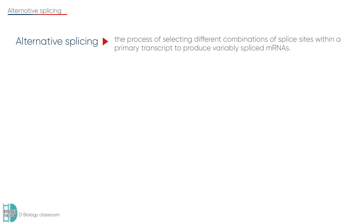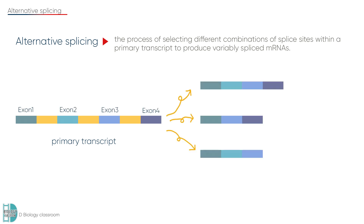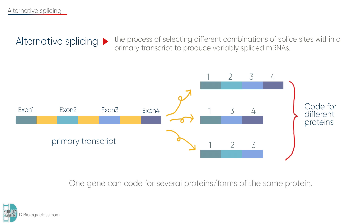Alternative splicing is the process of selecting different combinations of splice sites within a primary transcript to produce variably spliced mRNAs. It means a given primary transcript molecule can be spliced differently, resulting in different mRNAs being made from the original primary transcript. This allows the production of different proteins when the mRNA is translated, so one gene can code for several proteins or different forms of the same protein.